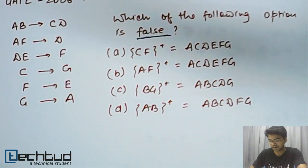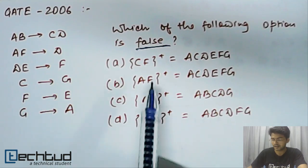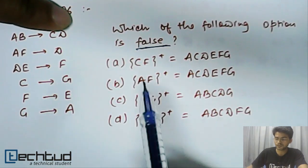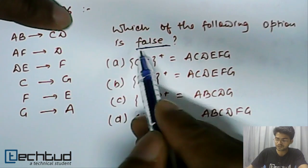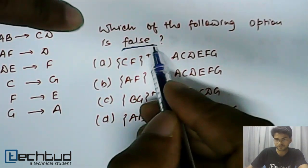A set of functional dependencies are given and we have to find out which one of the given options is false. We have to note that they are asking which one is false.